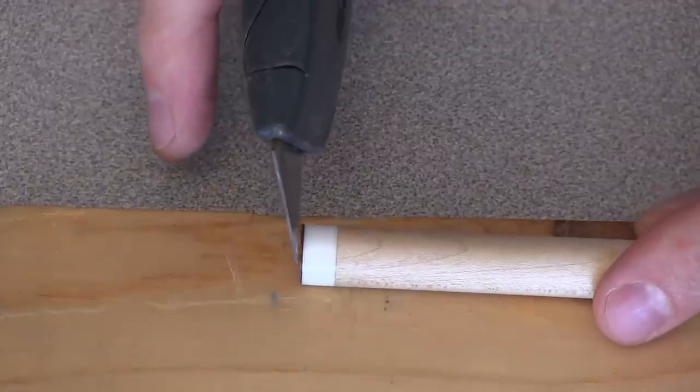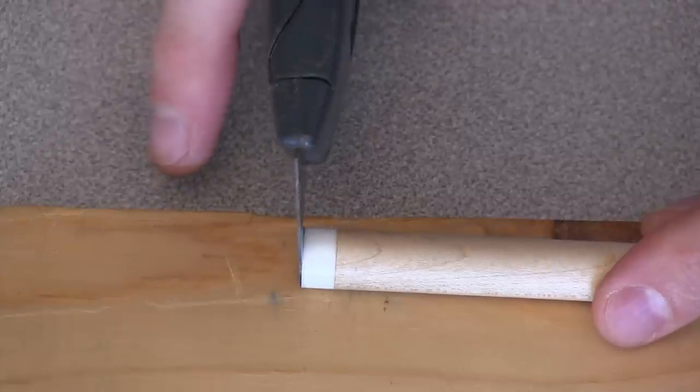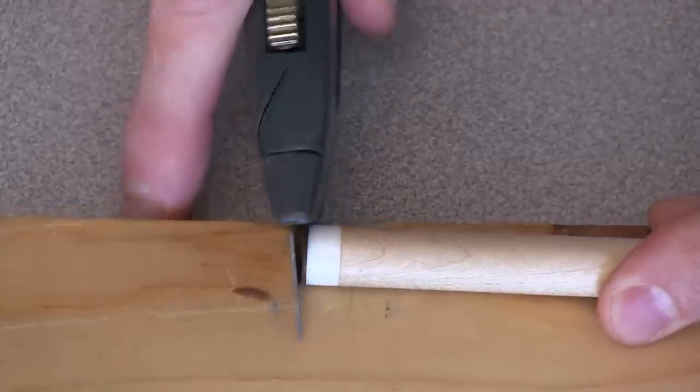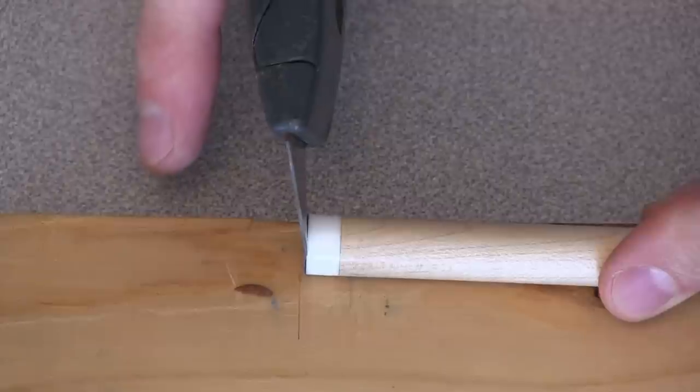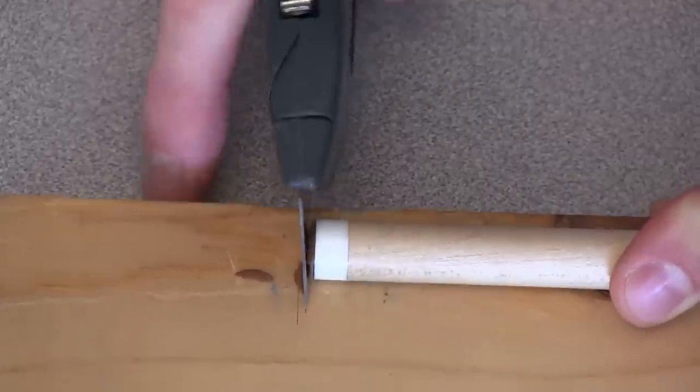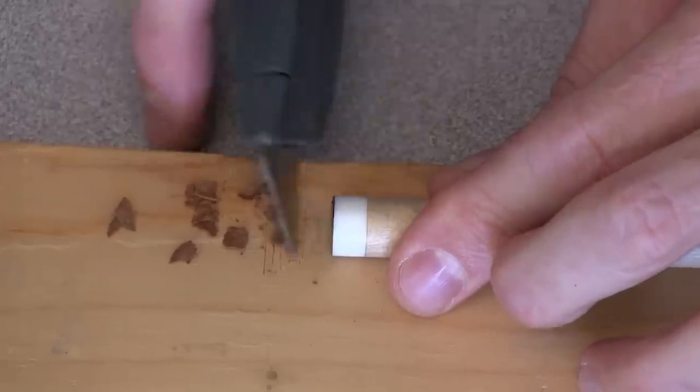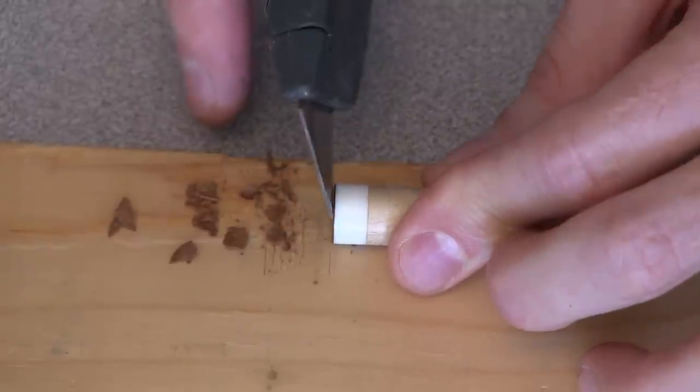Now carefully trim off the remainder of the tip, taking your time to remove only a thin sliver at a time. Be sure to keep the blade as flush as possible with the ferrule. As you get closer to the ferrule, the knife should mostly be scraping instead of cutting.